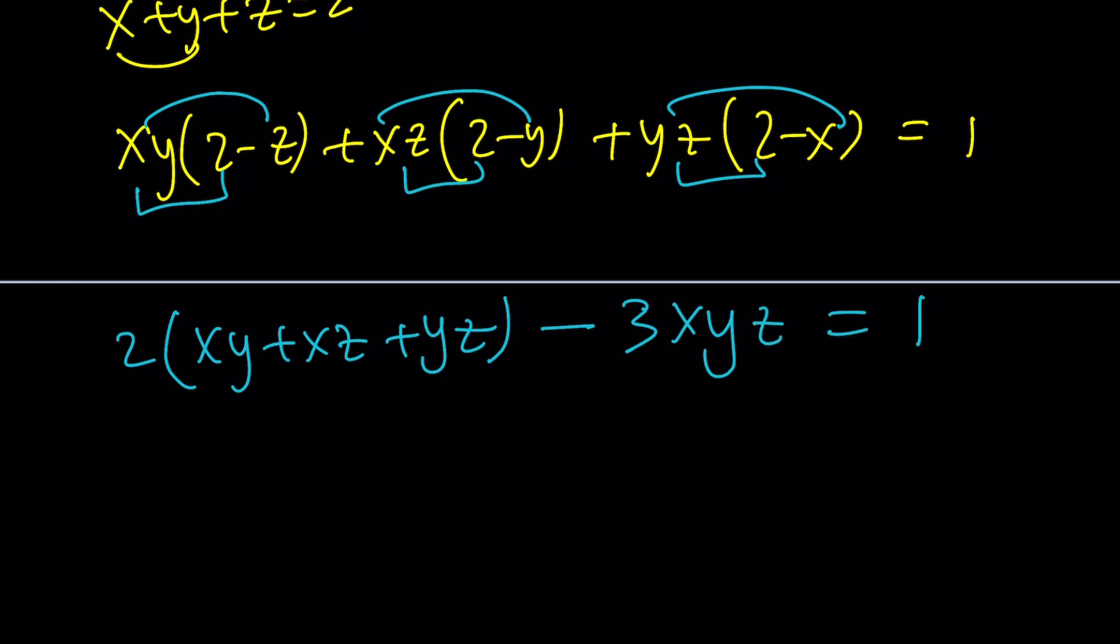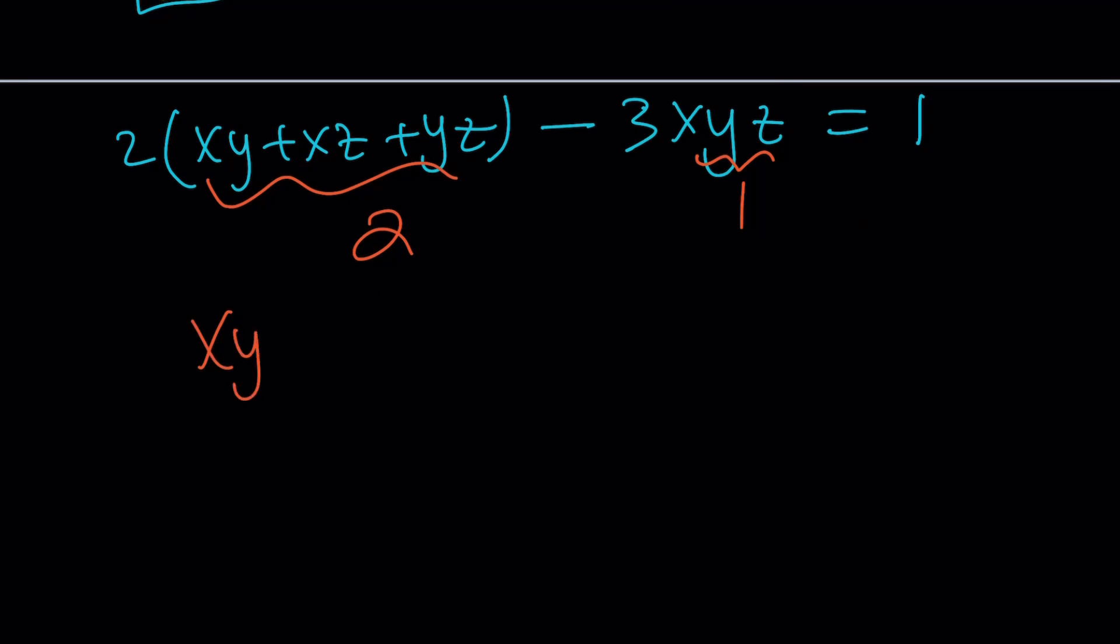And now, we can go ahead and find xyz from here because xy + xz + yz. We know that it's equal to 2 from the first method. We just cheated. Okay? 4 minus what equals 1? The answer is 3. So, xyz is equal to 1. And the rest is the same. All right?